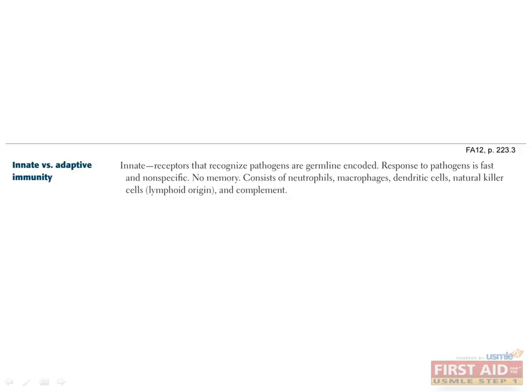Innate immunity is encoded in the germline. The response of the innate immune system is fast and nonspecific, which allows rapid combat against certain pathogens. However, there's no memory to the innate immune system, which means each pathogen is experienced for the first time, every time.